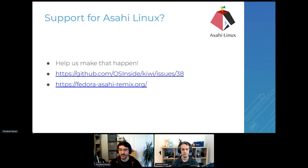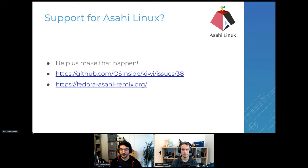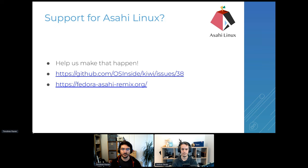The last item is support for ASAR Linux. We don't have support for that right now but we'd really like to have it, and we need help. One of the items needed is OSTree support in Kiwi, because Fedora remix images are built using Kiwi. It's hopefully not too much work — if you're interested in working on that, feel free to reach out to us.